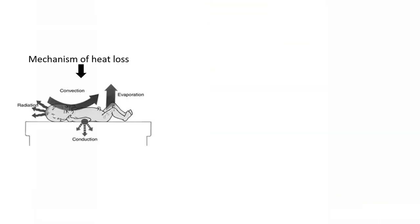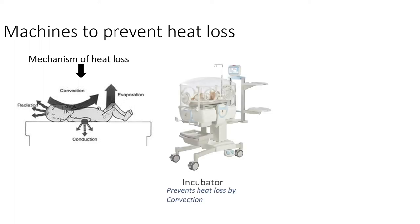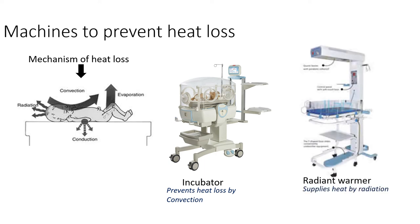Two machines help prevent heat loss in neonates. The incubator is a covered frame that prevents convection by not allowing air current transitions. The radiant warmer supplies heat to the newborn primarily through radiation and also somewhat by convection.